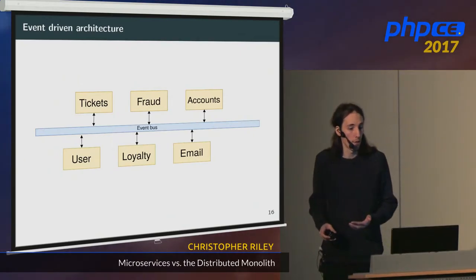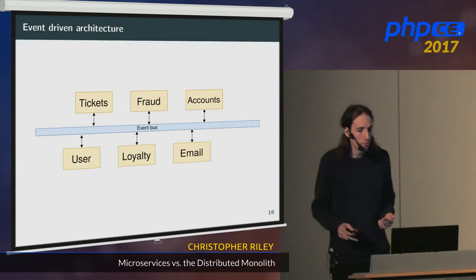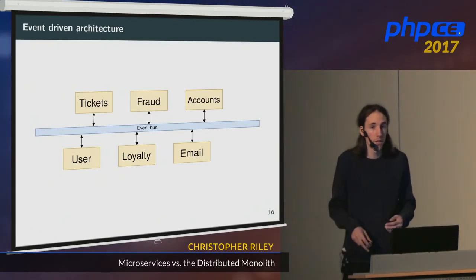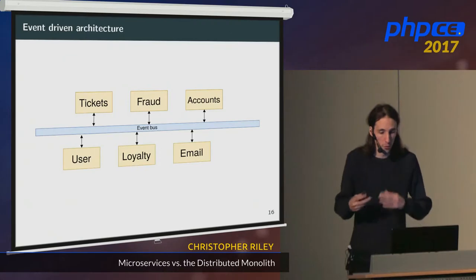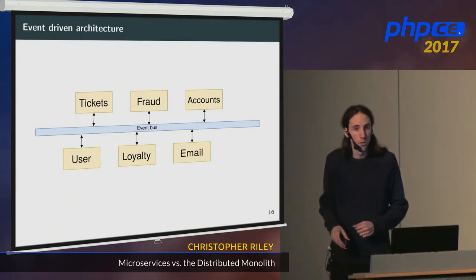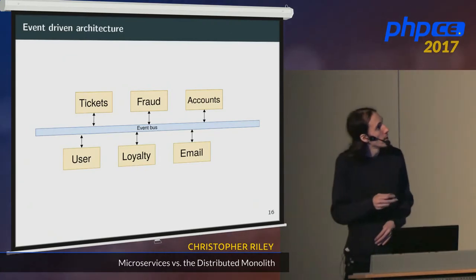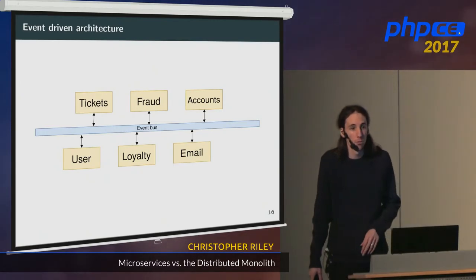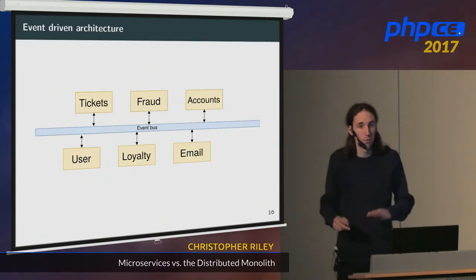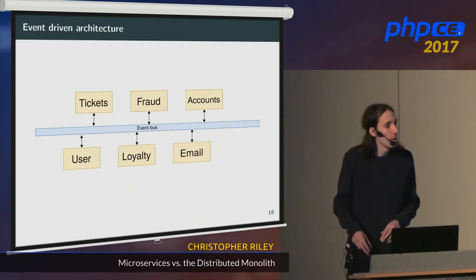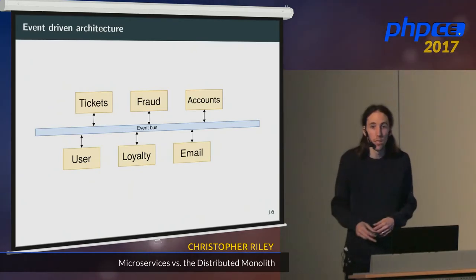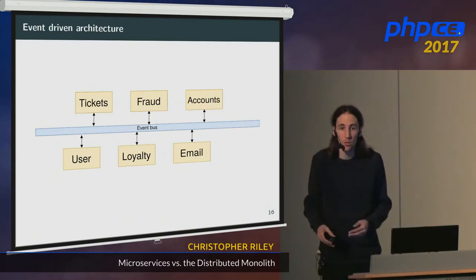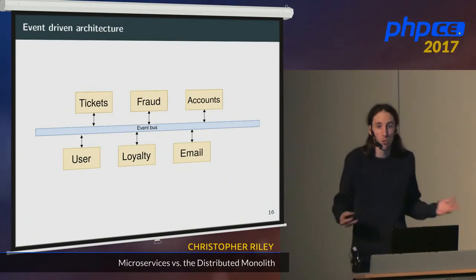In some instances, maybe the fraud microservice receives an event, does some fraud checks, and determines it shouldn't let that transaction go through — so it drops something on the event bus saying 'block that transaction' and sends an email to the customer saying 'sorry, your payment was declined', and probably also sends an email to someone in your business saying this transaction has been potentially flagged as fraudulent.